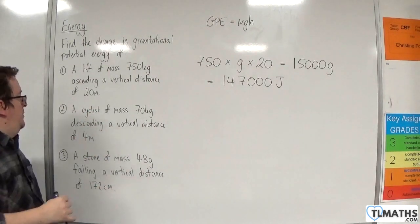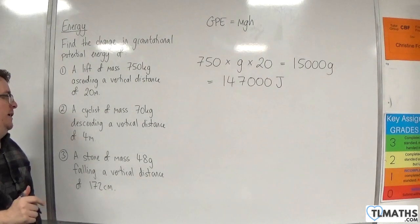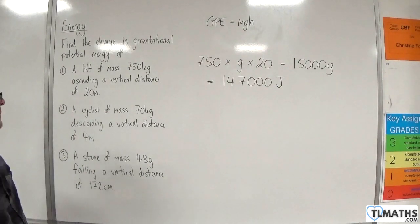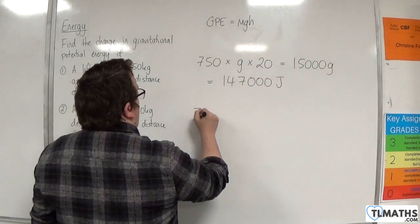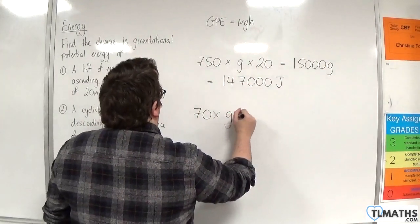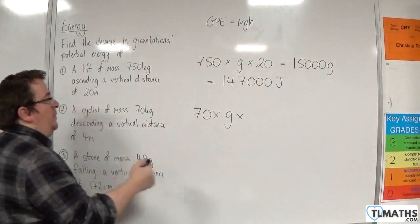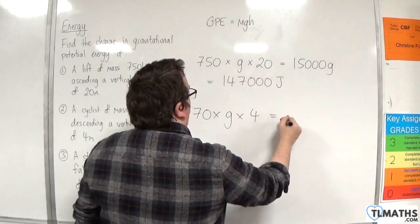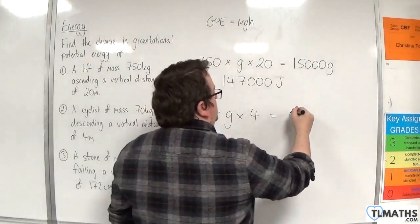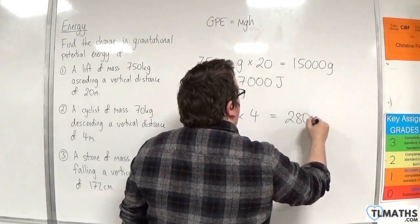How about for question number two? A cyclist of mass 70 kilos descending a vertical distance of 4 meters. So we would have M times G times H, which is 4. So 70 times 4 is 280, so we've got 280G.